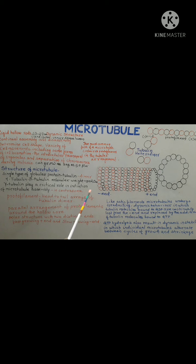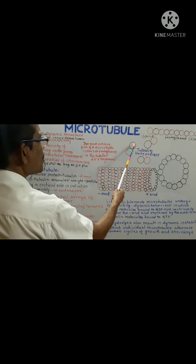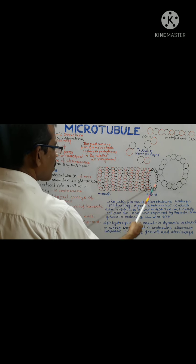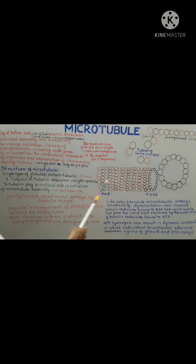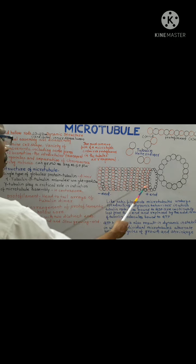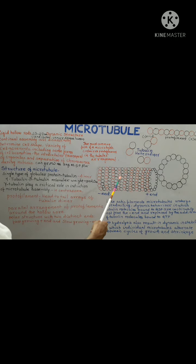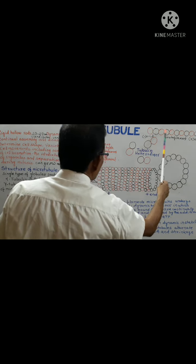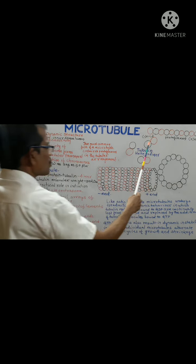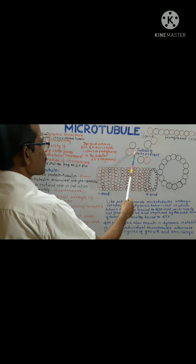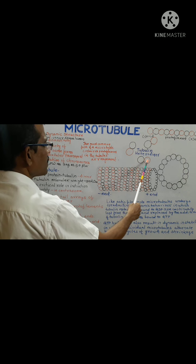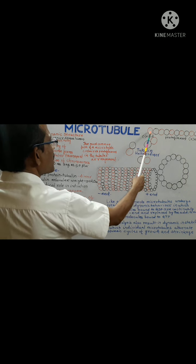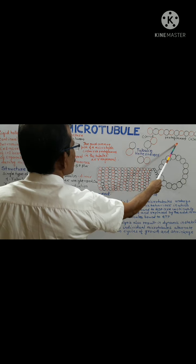Microtubule assembly is a process by which tubulin dimers are assembled to form a microtubule. The formation takes place in various steps. One important step is the formation of a protofilament, which is formed due to the head-to-tail arrangement of tubulin dimers.